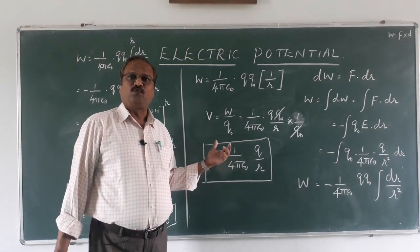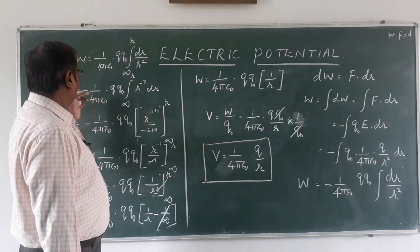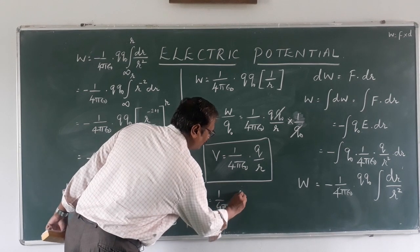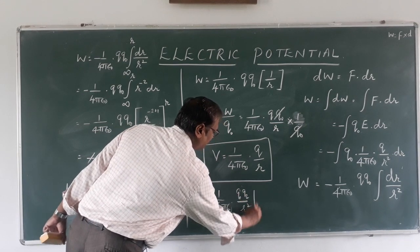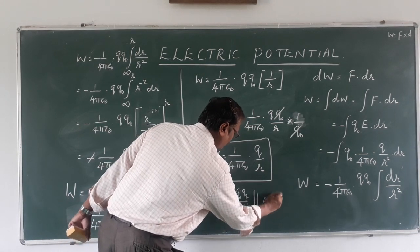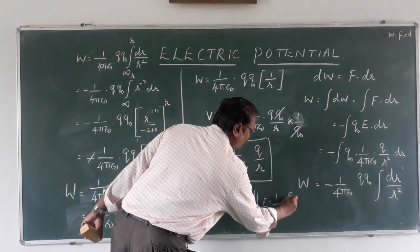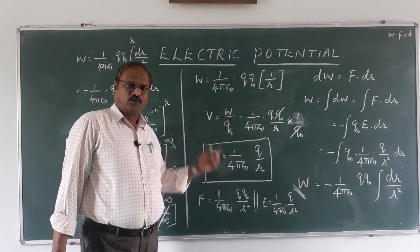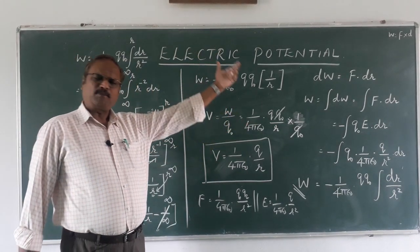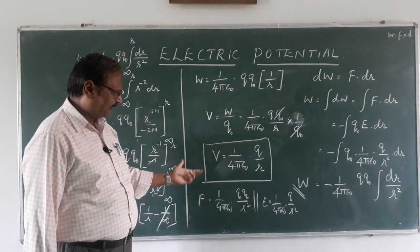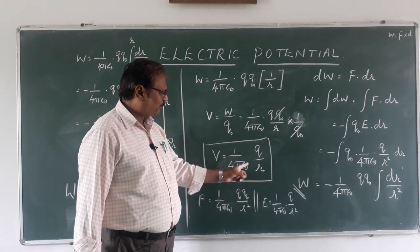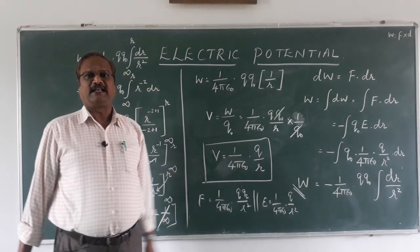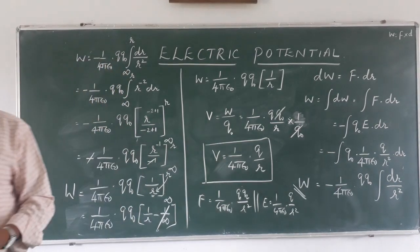Electric potential is measured in volt. Comparing all three: force F equals 1 upon 4 pi epsilon naught into q1 q2 upon r square; electric field equals 1 upon 4 pi epsilon naught into q upon r square; and now electric potential V equals 1 upon 4 pi epsilon naught into q upon r. With this we have completed the concept of electric potential. See you in the next video.